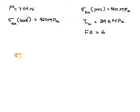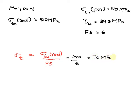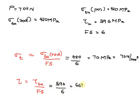The permissible tensile stress for rod sigma T is equal to sigma TU of rod divided by factor of safety, so it is equal to 420 divided by 6, which is 70 mega Pascal or 70 Newton per millimeter square. Similarly, the permissible shear stress for pin tau is equal to tau TU divided by factor of safety, which is equal to 396 divided by 6, which is 66 mega Pascal or 66 Newton per millimeter square.